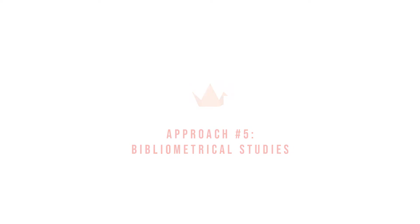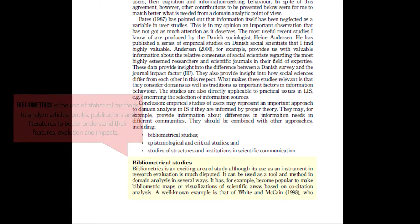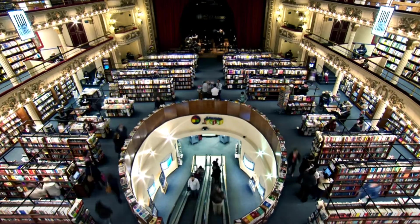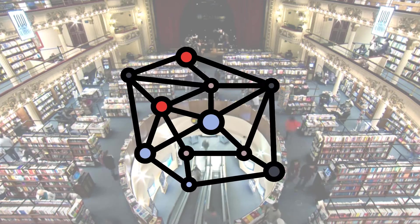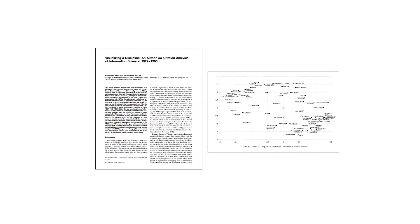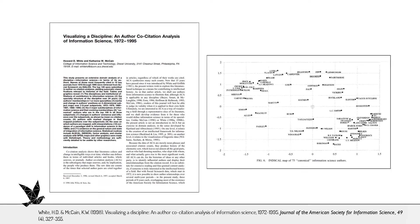Another approach to domain analysis is bibliometrical studies. Bibliometrics is the use of statistical methods to analyze articles, books, publications, and literatures to better understand their features, evolution, and impacts. Some bibliometrics produce vivid maps of literatures, which otherwise are only subjectively experienced. Hjørland points to White and McCain's well-known co-citation analysis of our own domain of information science, shown here as an example.